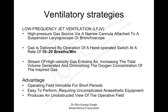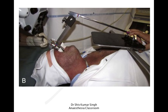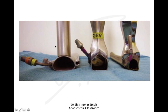The advantage here is that the operating field is immobile for short periods when you are not ventilating. It is easy to perform, requires uncomplicated anesthesia equipment, and produces an unobstructed view for the surgeon — there are no tubes to obscure the vision. This shows a suspension laryngoscope with the jet tube attached to it.